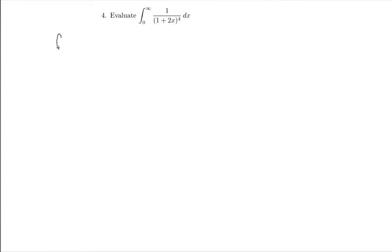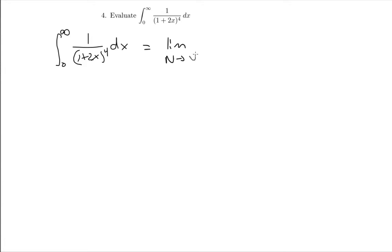The first thing we're going to do is remind ourselves what that actually means. The integral from 0 to infinity of 1 over (1 plus 2x) to the power of 4 with respect to x is just the limit as n goes to infinity of the integral from 0 to n — I've replaced this infinity by n — and then at the end of the calculation I'm going to let n go to infinity. 1 over (1 plus 2x) to the power of 4 dx.